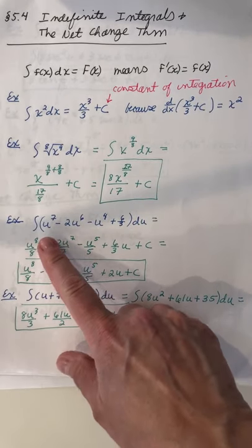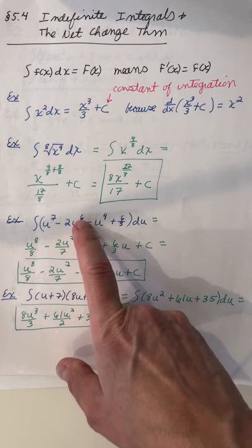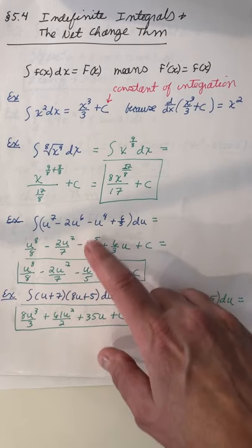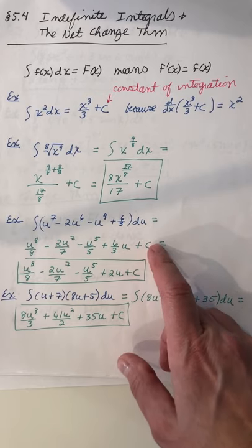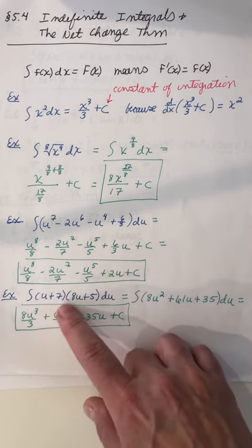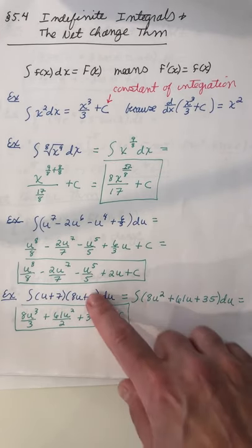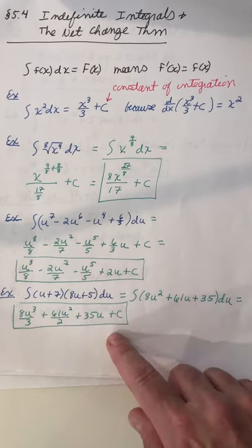Okay, and here again, this is a polynomial function. So you add 1, divide by the new power, add 1, divide by the new power, and then plus a constant. Simplify. Right here, you can go ahead and foil that out first, and then add 1, divide by the new power.